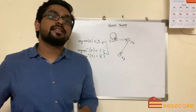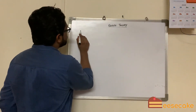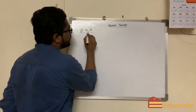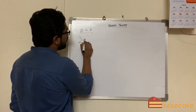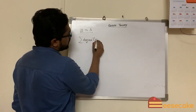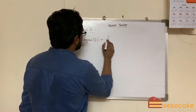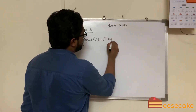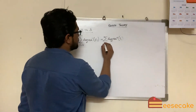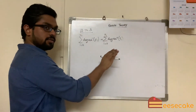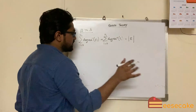After learning in-degree and out-degree, the theorem we have to learn is theorem number three. It is a very interesting theorem: the sum of all in-degrees of the vertices from i equals zero to n is equal to the sum of all out-degrees from i equals zero to n, and both of these also equal the number of edges.